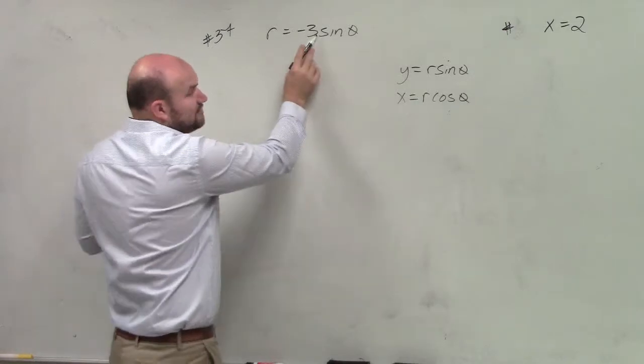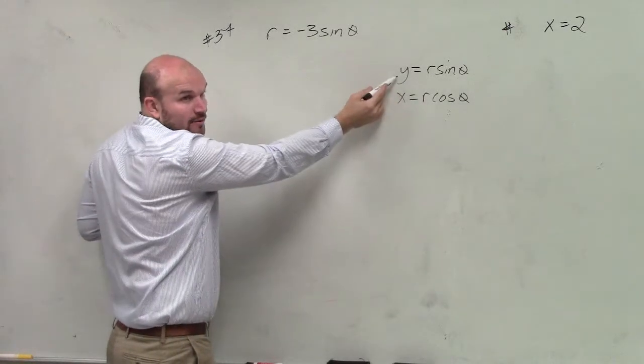So I basically need to multiply r times sine of theta, right? And that would give me my y. Would you guys agree with that?